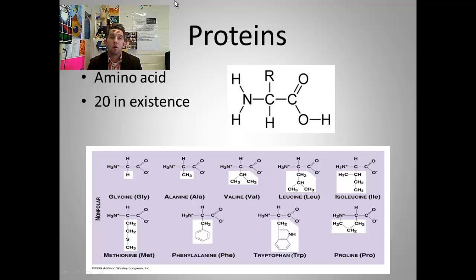The monomer, or the basic subunit of proteins, is the amino acid. Another name for an amino acid is a peptide. It's kind of reversible there.